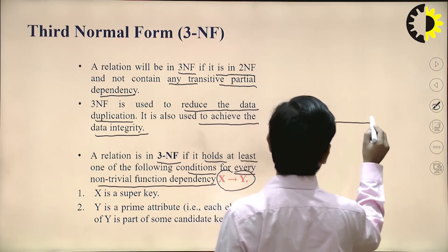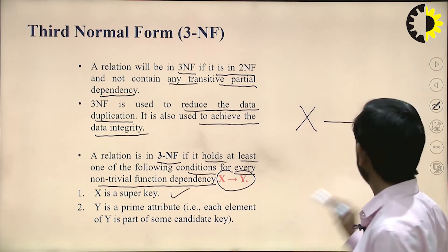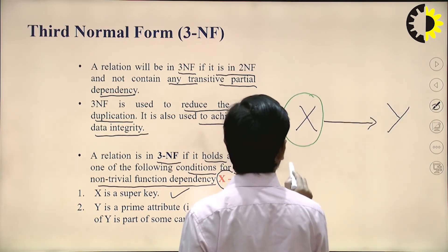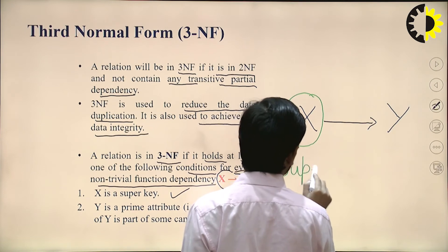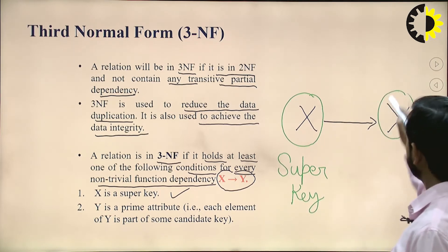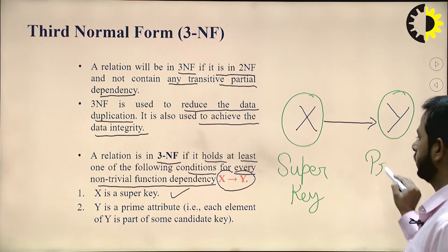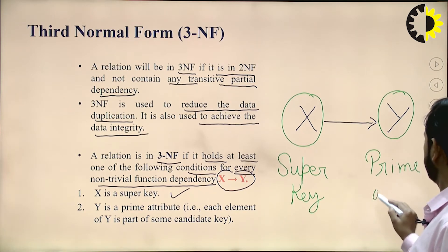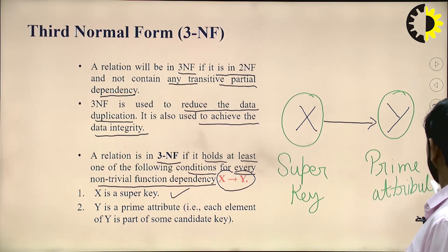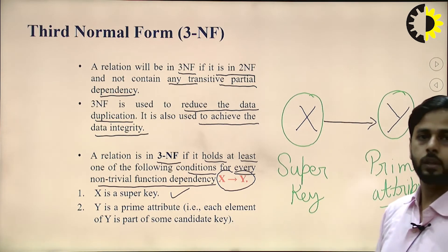Either X must be a super key, or Y is a prime attribute — meaning each element of Y is part of some candidate key.